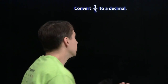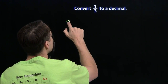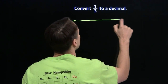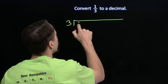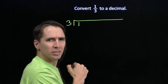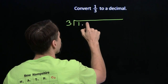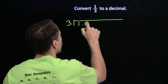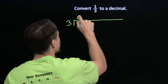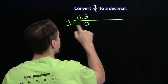A fraction is just division. Let's try division. We're going to divide 3 into 1. Of course, 3 doesn't go into 1 — we're going to need some tenths. 3 into 10 tenths, that's going to give us 3 tenths.